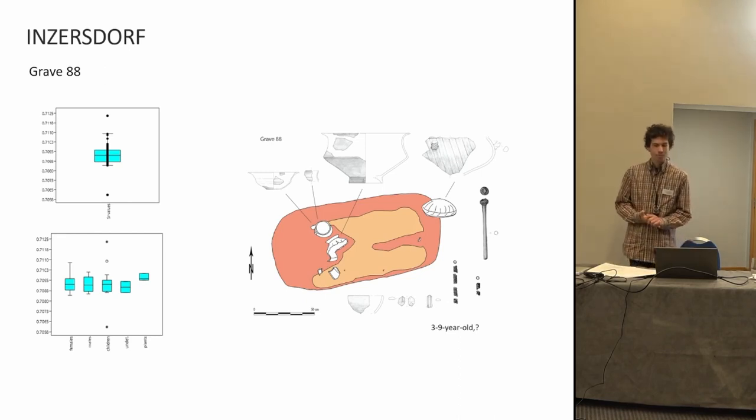The isotope of the organic molecules recovered from the ceramic matrix of other vessels of the period clearly plot in the ruminant dairy range. So we are confident that the vessels indeed contained the milk of cows, sheep, and goat, and were used to feed children.